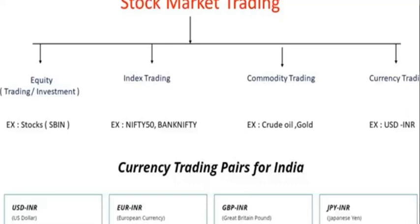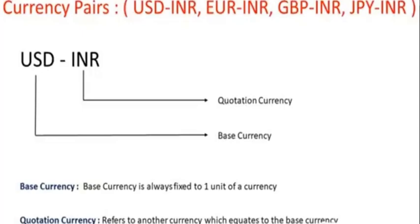What are the currency trading pairs available in the Indian stock market? The most popular currency pair is USD/INR — dollar and rupee. Other pairs available are EUR/INR (euro and rupee), GBP/INR (Great Britain pound and rupee), and JPY/INR (Japanese yen and rupee).